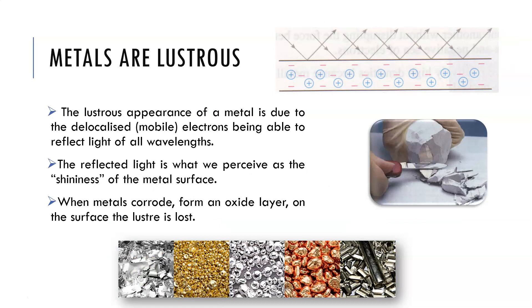The lustrous appearance of metals is sometimes hard to explain, and the model doesn't explain it particularly well. Generally, the lustrous appearance is due to delocalized mobile electrons reflecting light — as light comes in, it hits an electron and gets bounced back out. That reflected light is what we perceive as the shininess of the metal surface. Sometimes metals won't appear lustrous because they've formed an oxide layer on the outside — a crusty layer. On aluminium it's white and fluffy; on iron it's rust, an orangey-brown colour. Even the green coating on Flinders Street Station is a copper oxide layer — that copper would once have looked bright and shiny, but the corrosion prevents us from seeing the lustrousness underneath.